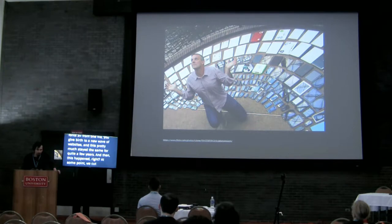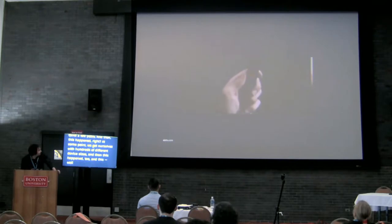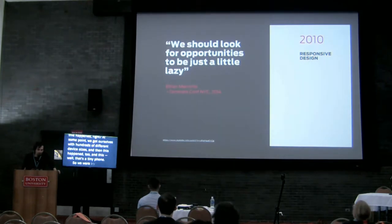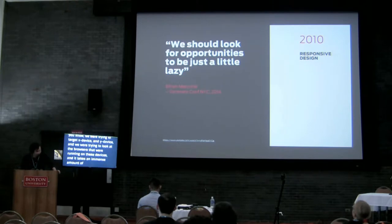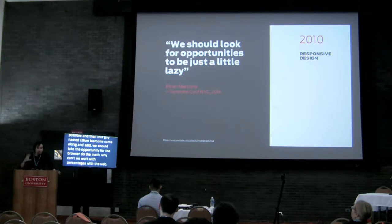At some point we were confronted with hundreds of different device sizes, and we were trying to build websites the same way — targeting specific devices, doing browser sniffing — and it was taking an intense amount of time. We were not being successful reaching every single device. So this brilliant man, Ethan Marcotte, came around and said we should look for opportunities to be a little lazy: why don't we let the browser do the math, start making responsive stuff, working with percentages? It shifted the way we looked at the web and went to another transformation.